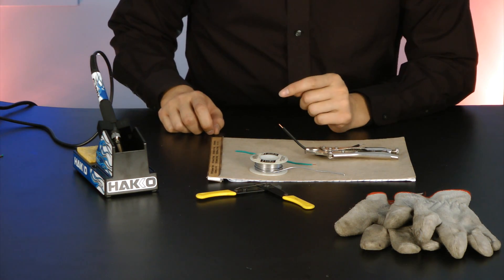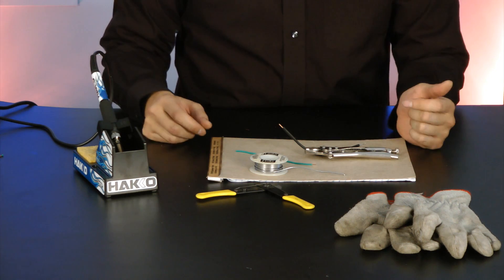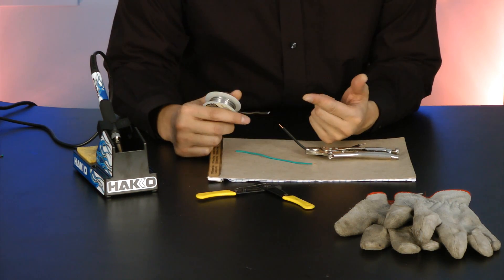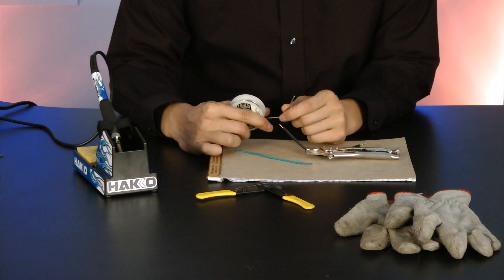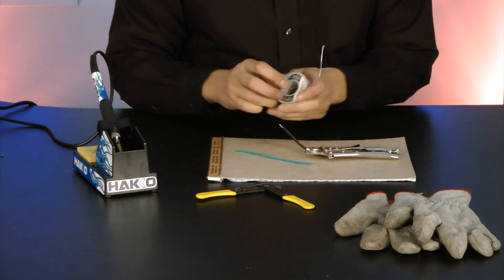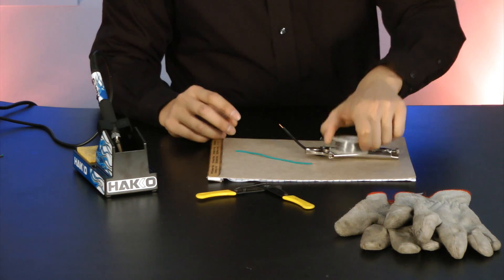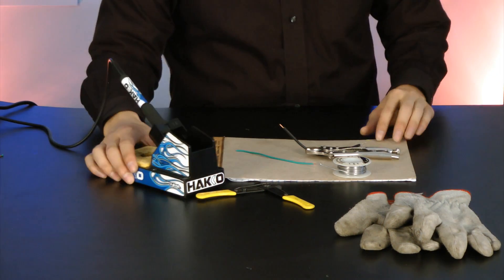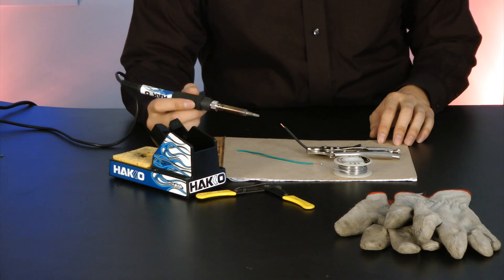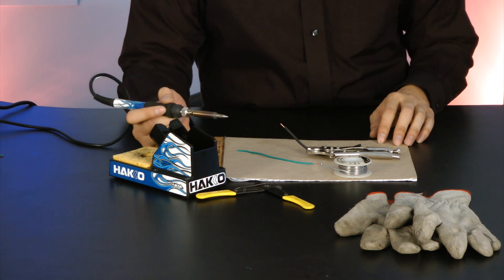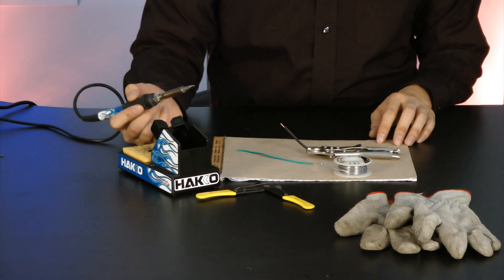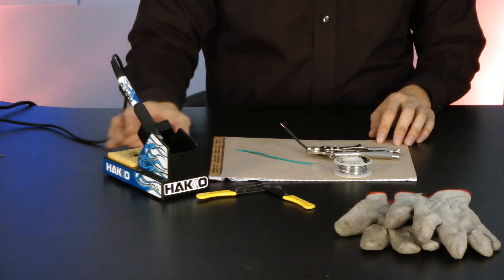Always solder in a well ventilated area. The flux from the solder is quite toxic, so try not to breathe in the fumes when working with it. And also, the soldering iron gets very hot. Keep it away from anything that is flammable, and try not to burn yourself in the process.